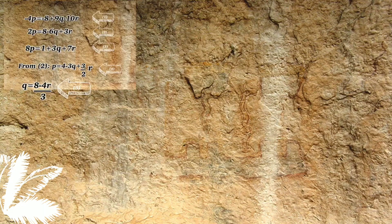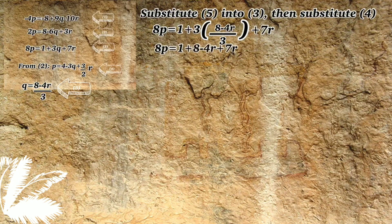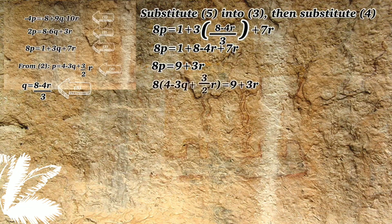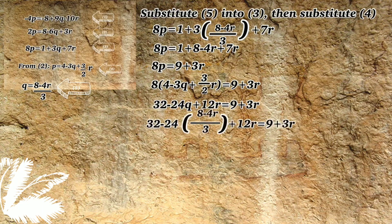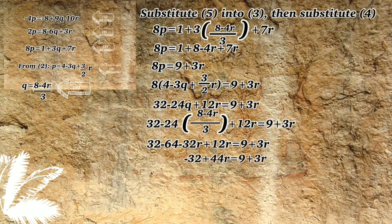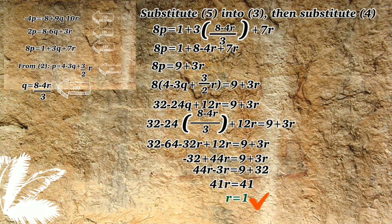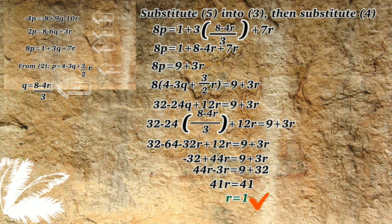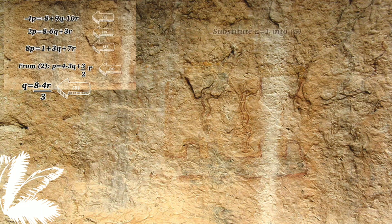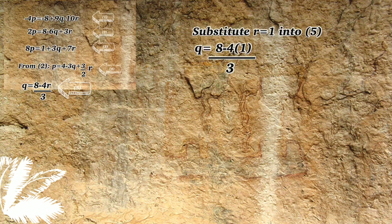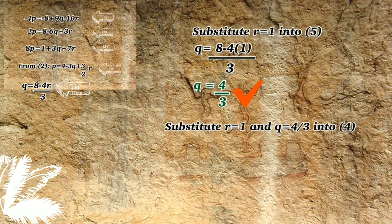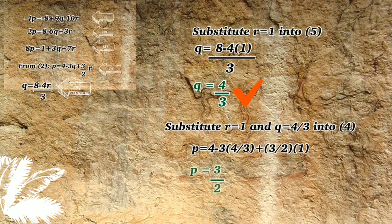After that, substitute equation 5 and equation 4 into equation 3. But to make it less complicated, I substitute equation 5 into equation 3 first, followed by equation 4. And there you go — we will get r equals to 1. Next, substitute r equals to 1 into equation 5, and we will get q equals to 4 over 3. And lastly, substitute the values of r and q into equation 4, and we will get b equals to 3 over 2.